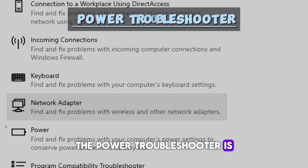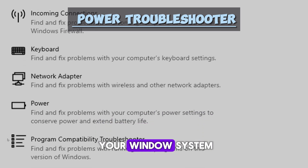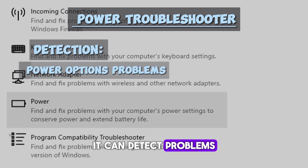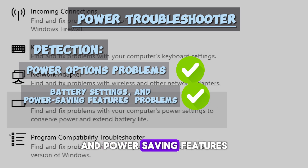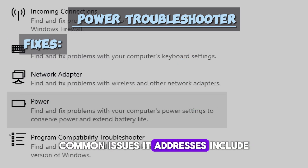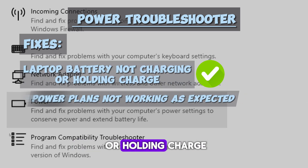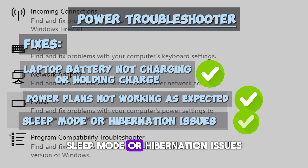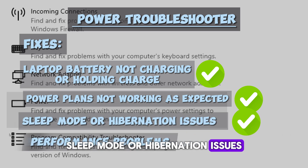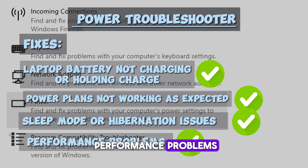The Power troubleshooter is designed to diagnose and resolve issues related to power settings and power management on your Windows system. It can detect problems with power options, battery settings, and power saving features. Common issues it addresses include laptop battery not charging or holding charge, power plans not working as expected, sleep mode or hibernation issues, and power management settings causing system instability or performance problems.